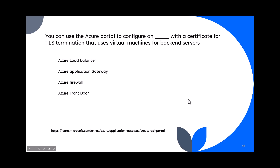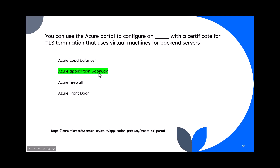Question 90: You can use the Azure portal to configure blank with a certificate for TLS termination that uses virtual machines as back-end servers. This involves TLS termination and back-end servers. Azure Load Balancer is layer 3 and cannot do TLS termination. Application Gateway is layer 7 and can perform TLS termination with back-end servers. The answer is Azure Application Gateway.